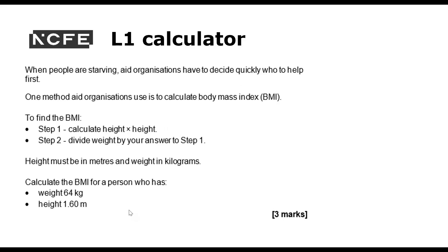This next one is another level one question. I can use a calculator again. When people are starving, aid organisations have to decide quickly who to help first. One method aid organisations use is to calculate body mass index BMI. To find the BMI, step one, calculate height times height. Step two, divide weight by your answer to step one. Height must be in metres and weight in kilograms. Calculate the BMI for a person who has a weight of 64 kilograms and a height of 1.6 metres.